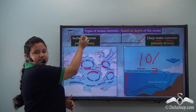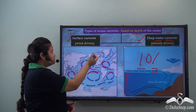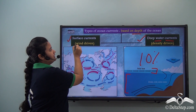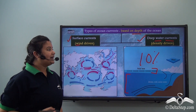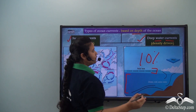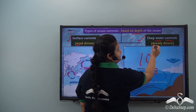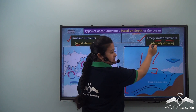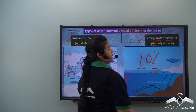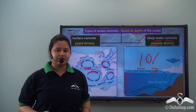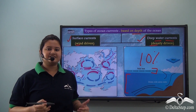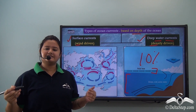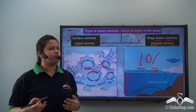The surface currents are mostly driven by wind, while the deep water currents depend on density. The movement of deep water currents is called thermohaline circulation.